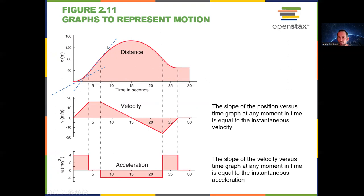Here we have a still positive slope, but the slope is getting less and less. At the peak, the tangent line would be horizontal — so that's zero velocity. Then on the other side, there's a small negative slope, then a bigger negative slope, getting bigger and bigger in the negative direction.